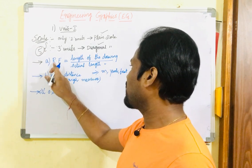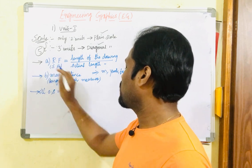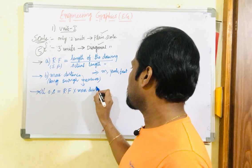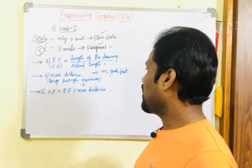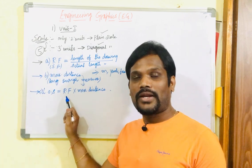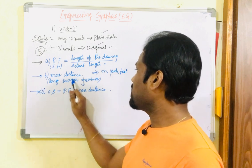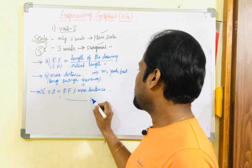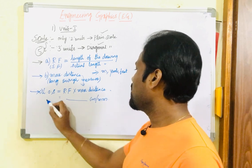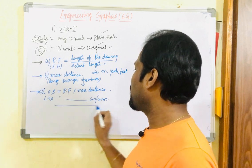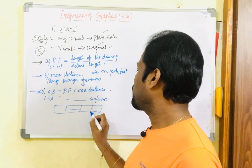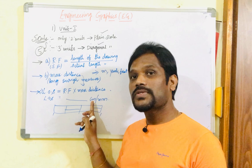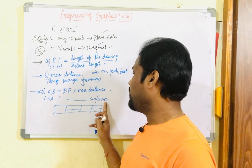The length of the scale is calculated using the representative factor (RF) multiplied by the maximum distance. If the RF is given directly, substitute it — for example 1/200 or 1/300 — and the maximum distance such as 9 meters must be converted into centimeters or millimeters. This distance is what you will plot on your drawing sheet — it is the length of the scale to be calculated.